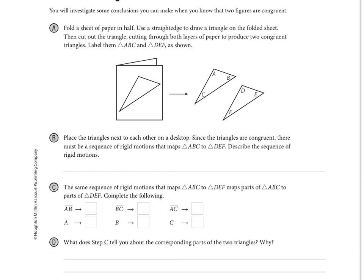So when we talk about parts, we're talking about sides as well as angles. And of course, sides are segments and angles need to have that same notation with them. So we just are going to look at part C and fill in the blanks here. It says the same sequence of rigid motions that maps triangle ABC to triangle DEF maps every part of triangle ABC to every part of triangle DEF.